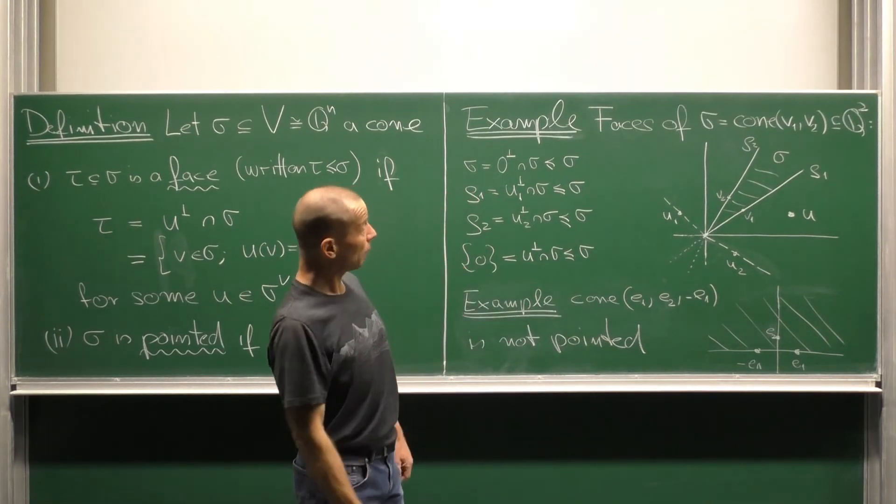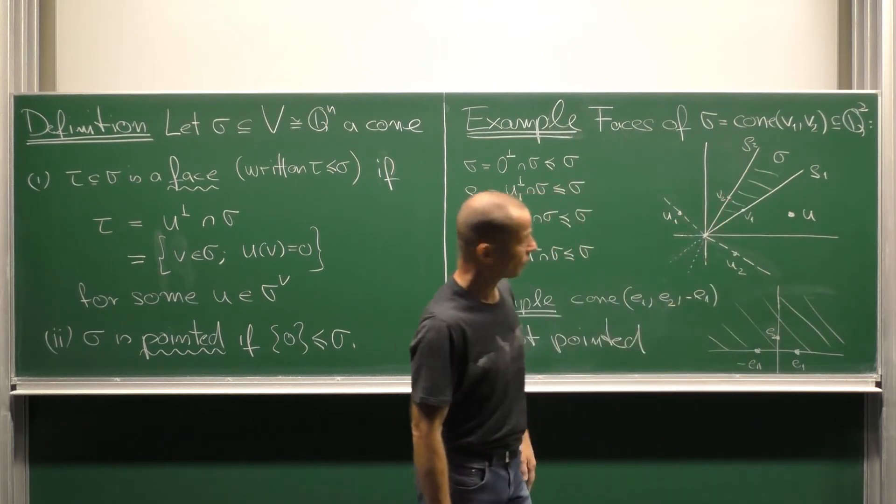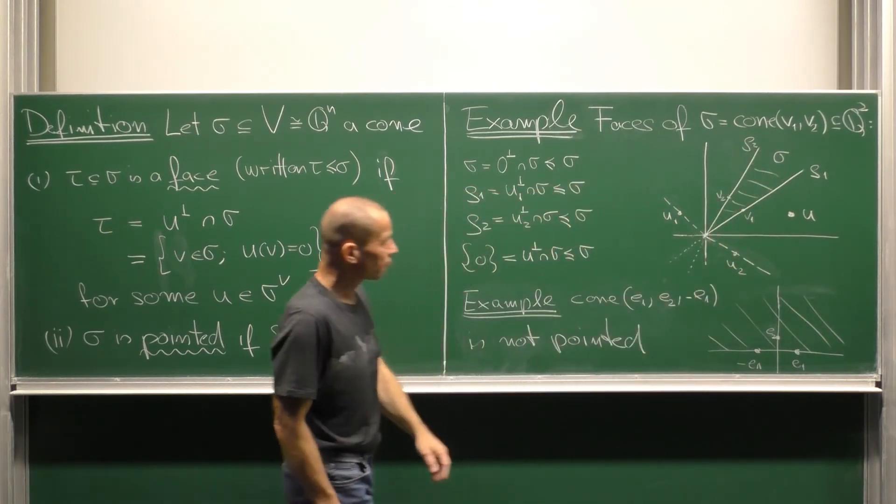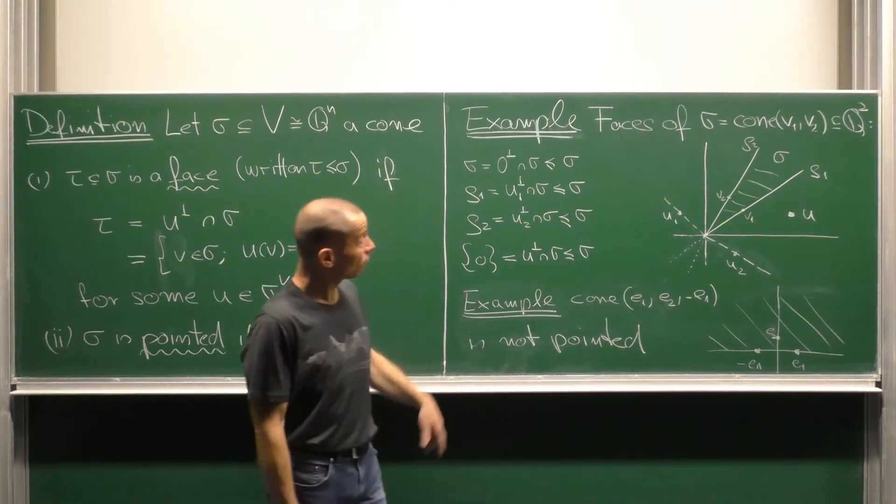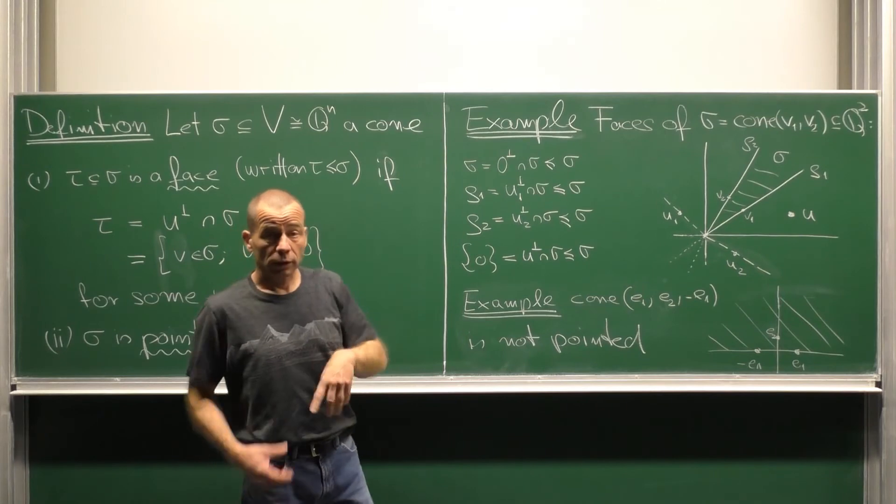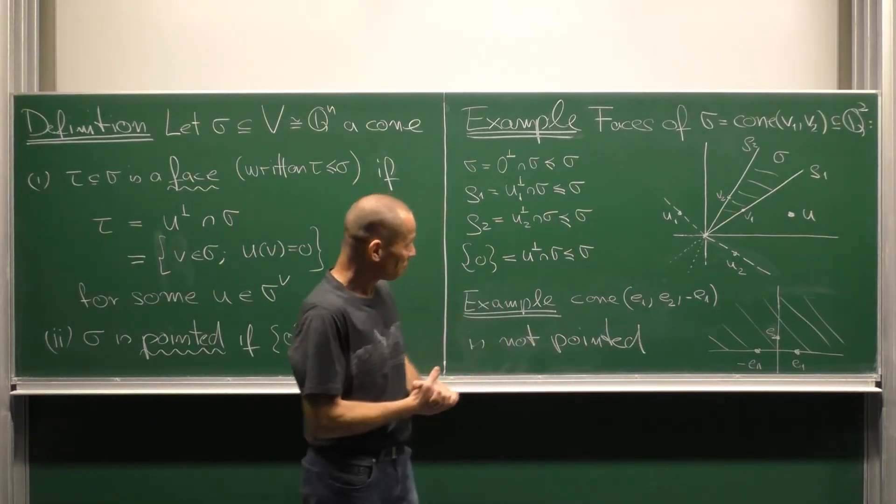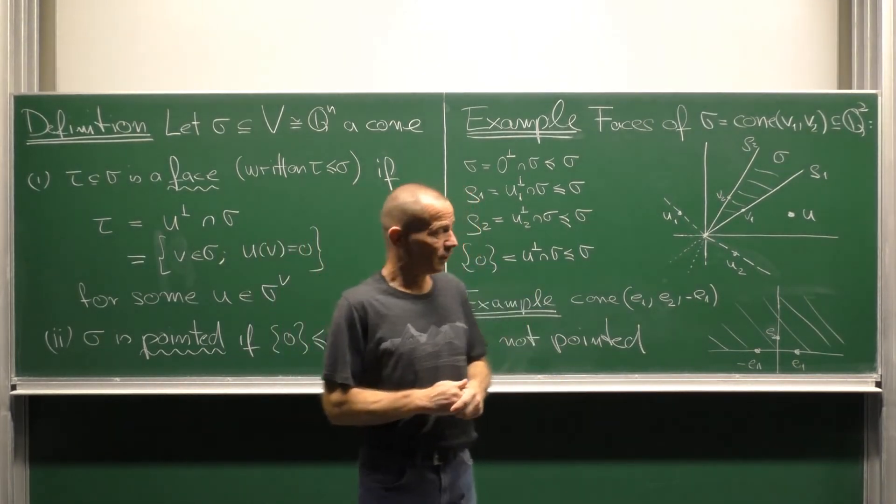Let us look at an example. Consider a cone sigma generated by two vectors in Q2, so this cone here. Now, we want to determine all the faces of the cone sigma. The first one is sigma itself. It is cut out by the zero form. So a cone is always a face of itself.